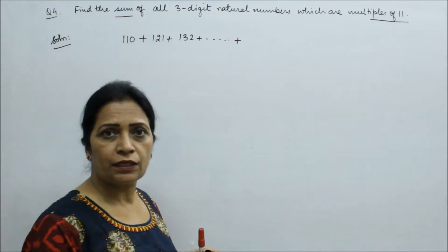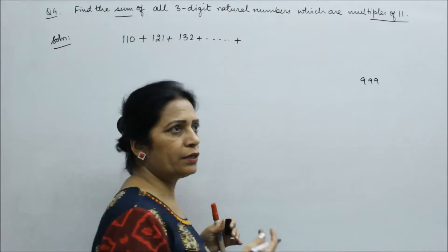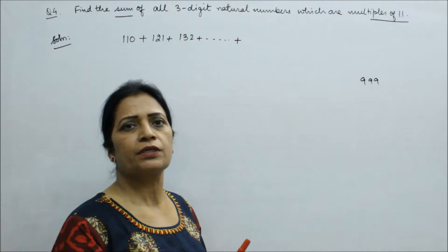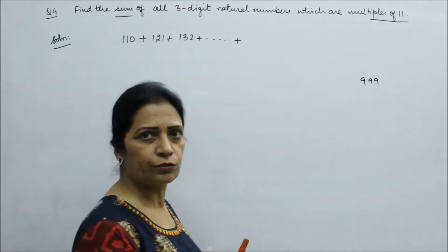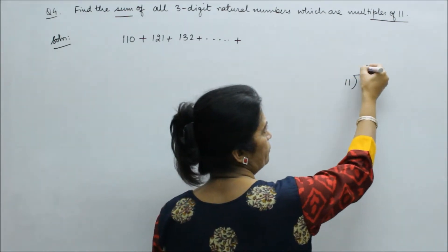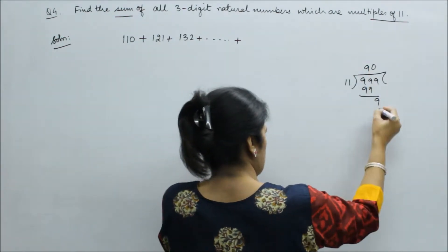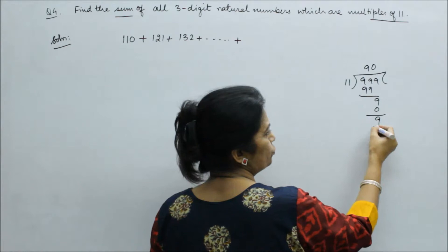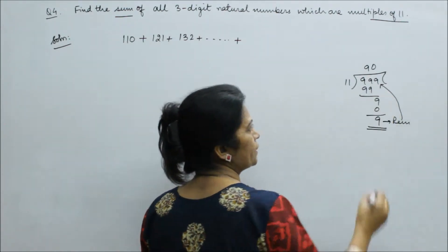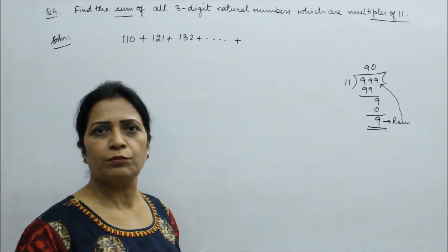Last 3-digit number is 999. Now we check if this is divisible. If not, then the first number which is divisible by 11 which is less. So how do we do this? 11 divided into 999. So 9 times 11 is 99. What remainder do we have left?